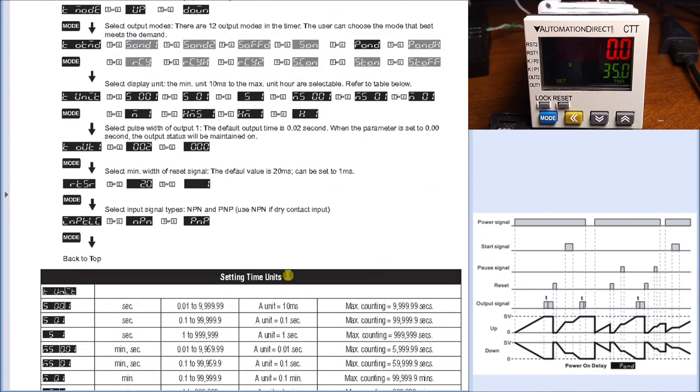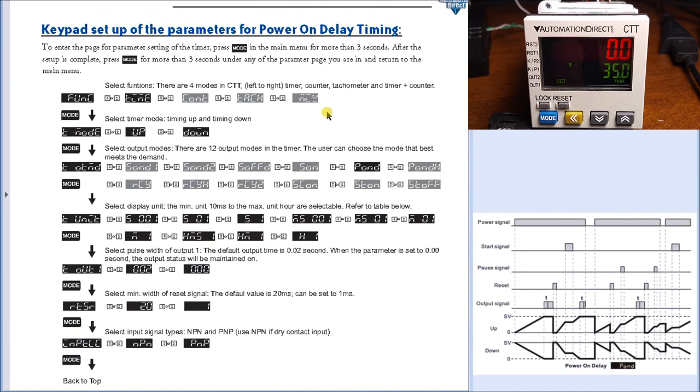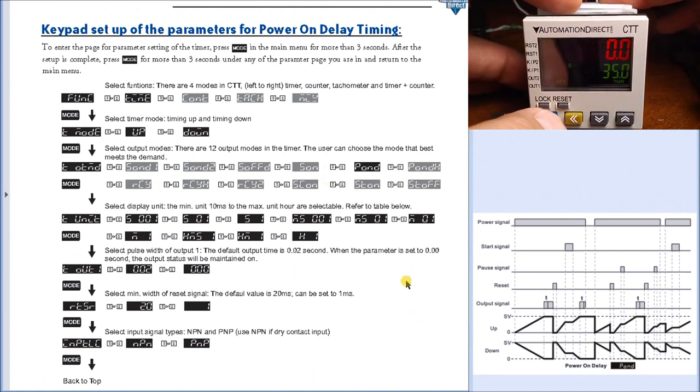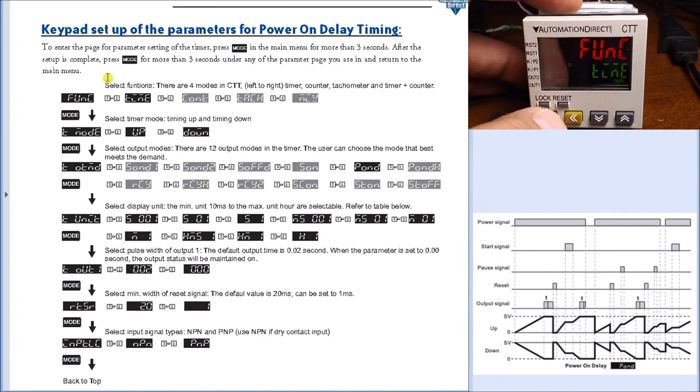We'll go back to the actual programming itself here. We'll look at my unit, we'll hit and hold the mode key for three seconds. It will bring it into the time mode which is located right here, then hit the mode again.